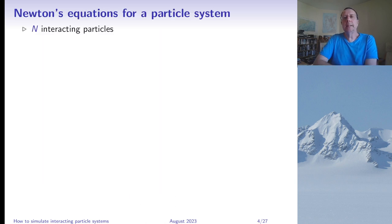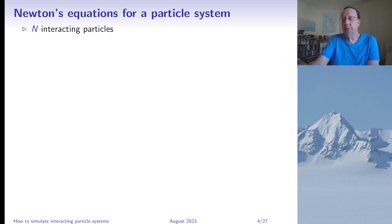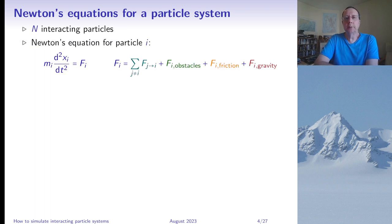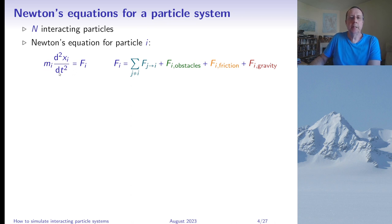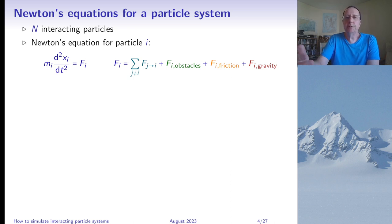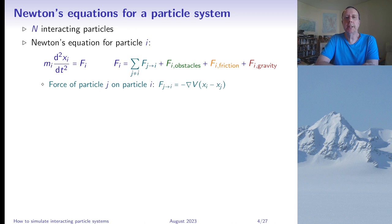Now let's look at how to describe such a system. We have n interacting particles — in my simulations n can be a few hundreds up to a few thousand. The basic governing law is Newton's equation: m_i times its acceleration equals the total force acting on particle i. This force has several sources. The first source is the sum of all forces from other particles: F_{ji} is the force of particle j on particle i, usually taken as minus the gradient of some potential depending on the difference of positions.